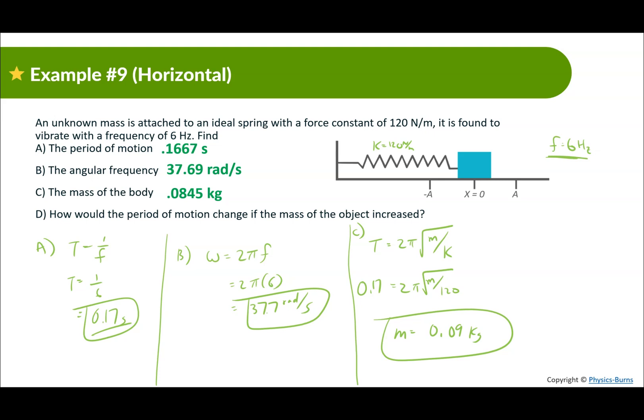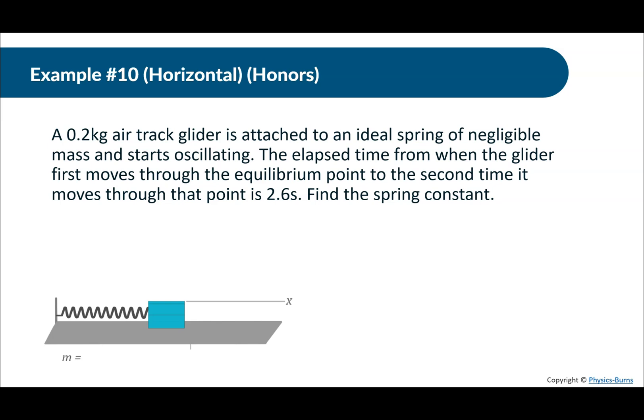D. How would the period of motion change if the mass of the object increased? So a lot of times when looking at questions like this, you want to intuitively think about it. My suggestion is to more analyze it and look at the formula. So we have period is equal to 2π square root of m over k. What we can notice is if this m goes up, since it's in the numerator, that means this period will also go up. So it'll also increase. Mass increases, the period increases.